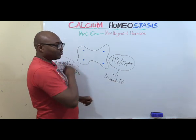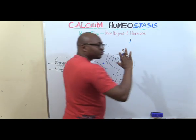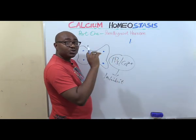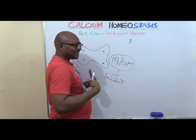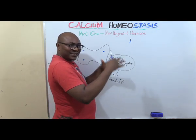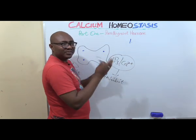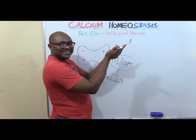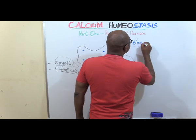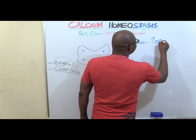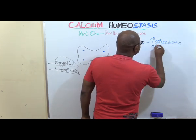Now let's see how parathyroid hormone acts on those three sites. Number one, in the bones: PTH increases osteoclastic activity — breaking down the minerals, calcium and phosphate — and starts releasing them into the blood. By doing so, it raises calcium levels.